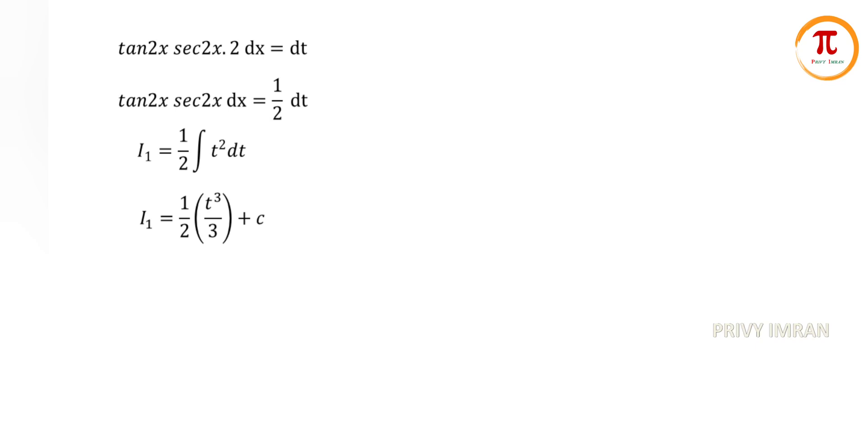Now let me substitute the value of t, which is secant 2x. Hence I1 can be written as 1 by 2 into secant cube 2x divided by 3 plus c.